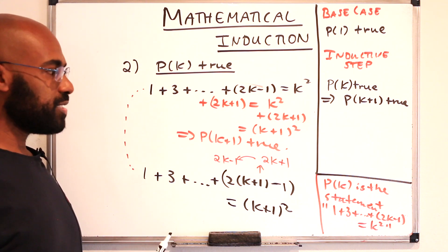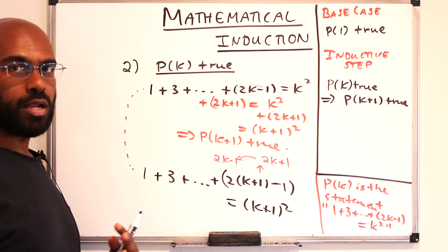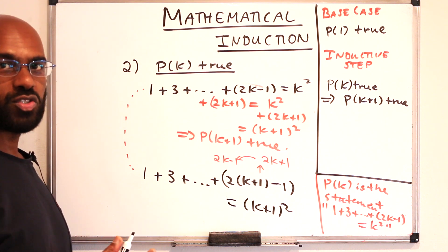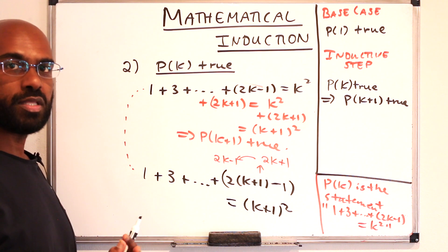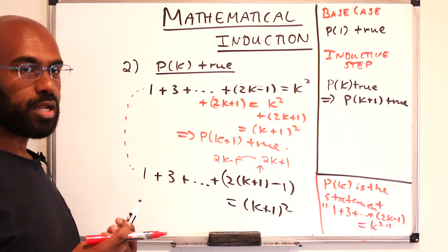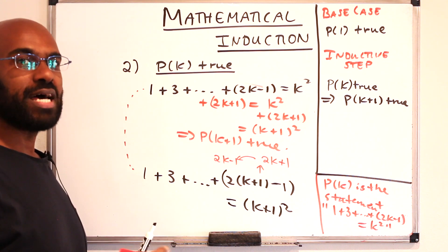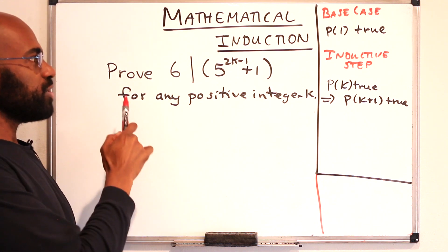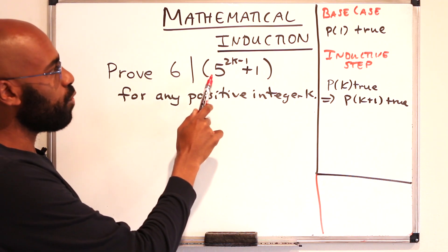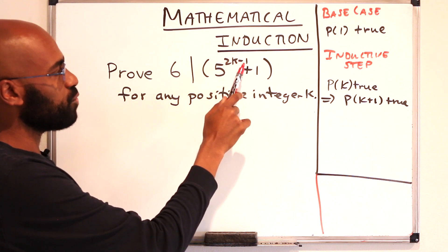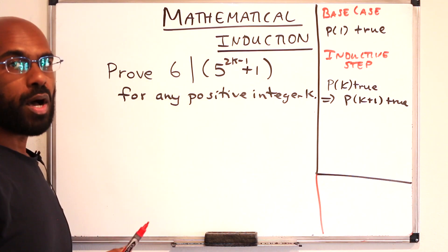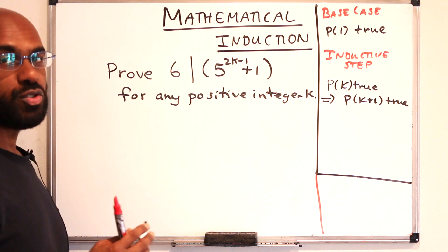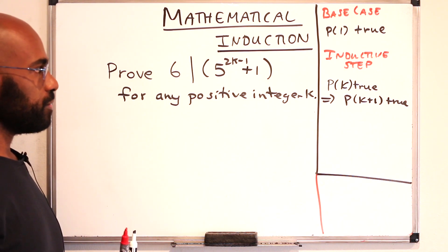Now when you look at this, it doesn't seem very applicable in a number theory sense, and a lot of the work we've been doing has to do with divisibility. So I want to bring another example that actually uses that instead. Let's look at this example, which asks us to prove that 6 divides the quantity 5 to the 2k minus 1 plus 1 for any positive integer k. Now there are different ways to prove this, but I want to actually use mathematical induction to do it.